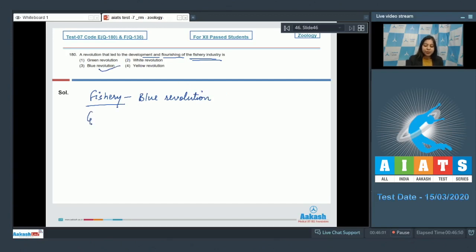Green revolution led to the flourishing of agriculture and crops. White revolution is related with milk. Number four, yellow revolution was launched to increase the production of oil seeds. So the correct answer becomes option number three, that is blue revolution.